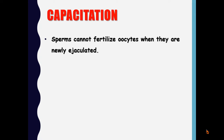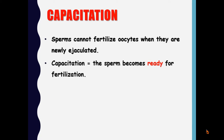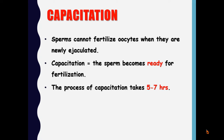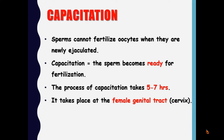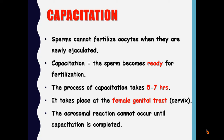The sperms cannot fertilize the oocytes when they are newly ejaculated from the male, so they need to undergo a process called capacitation, which means that the sperm becomes ready or capable for fertilization. This process of capacitation takes about five to seven hours and takes place inside the female genital tract, mainly inside the cervix. The acrosomal reaction cannot occur until capacitation is completed.